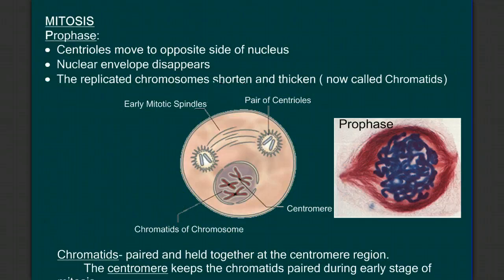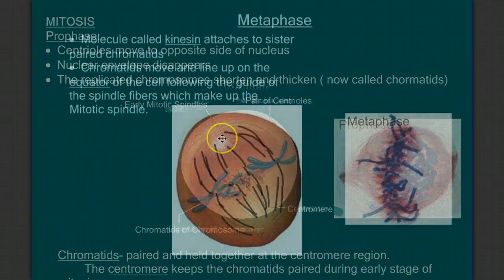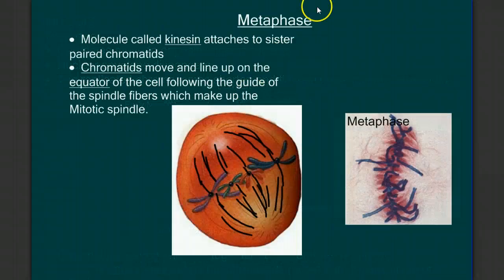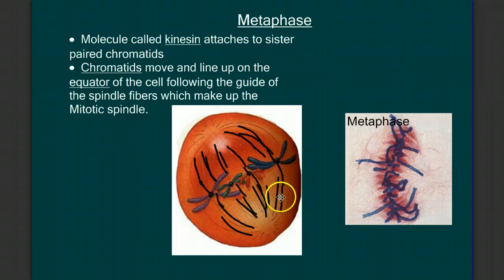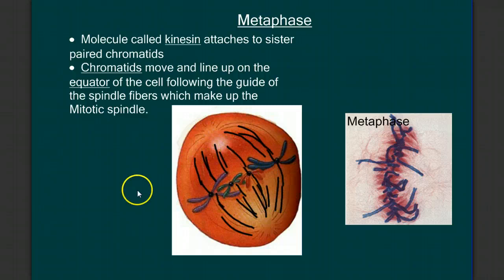After prophase, we have metaphase. Think of metaphase — think of middle, meta-middle. The duplicated chromosomes line up on the equator of the cell, as we can see here in this slide. The spindle fibers, these protein threads, will attach to the kinetochores — these areas where the two chromosomes are attached.